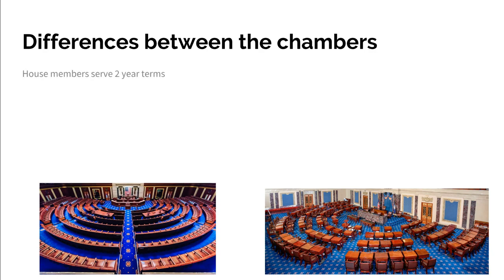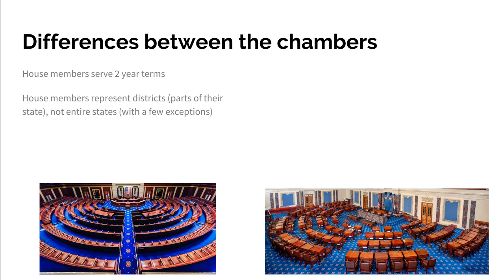House members serve two-year terms, so they're not there very long. House members represent districts, which for most states means you're only representing part of your state. States with very low populations — like North Dakota, South Dakota, Wyoming, and Rhode Island — have only one House member who represents the whole state. But every state gets at least one representative. Overall, there are 435 members in the House, and that gets divided up every ten years. We have a whole video on reapportionment on the channel to see how the 435 seats are divided up.